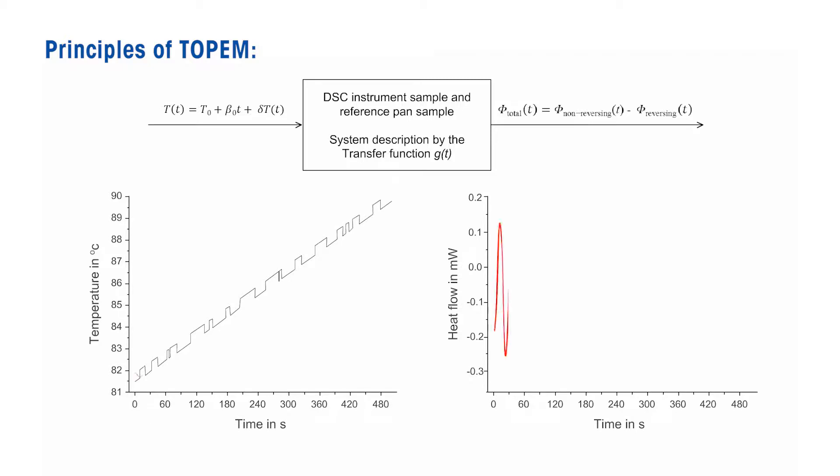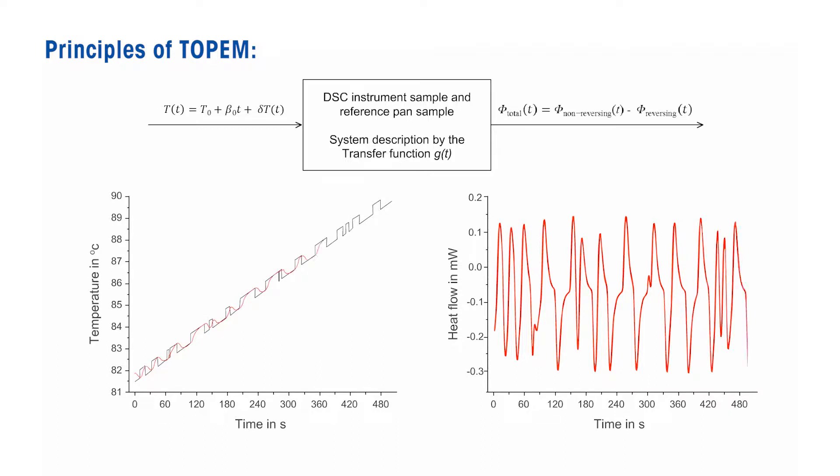In fact, the signal contains all of the information needed about the frequency behavior of the system. The mathematical evaluation analyzes the correlation between the heating rates and the measured heat flow. This yields information about the quasi-static-specific heat capacity and about the frequency dependence of the heat capacity.